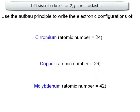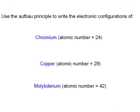In lecture 1.3.2, I had asked you to use the Aufbau principle to write the electronic configurations of chromium, copper and molybdenum. If you apply the Aufbau principle, you would have got the electronic configurations to be as follows.